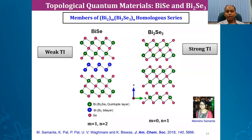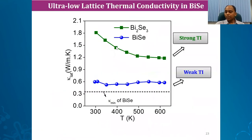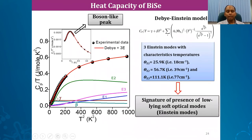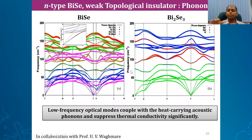Looking at the thermal conductivity, BiSe — the compound with the bismuth bilayer — shows ultra-low thermal conductivity compared to Bi₂Se₃. The only structural difference is that bismuth bilayer. Low-temperature heat capacity measurements show low-energy Einstein modes, indicating optical phonon softening confirmed by a boson-like peak. Phonon calculations show that these low-energy optical phonon modes — shown as purple dots — come from the bismuth bilayer, whereas Bi₂Se₃ does not have this feature.